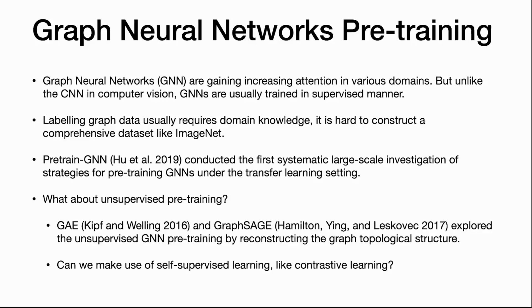The pre-trained GNN work first conducted a systematically large-scale investigation of strategies for pre-training GNNs under transfer learning settings. But what about unsupervised pre-training? We have graph auto-encoders and GraphSAGE, which explored unsupervised GNN training by reconstructing the graph topological structure, designing specific training tasks. But can we make use of self-supervised learning, like contrastive learning? And the answer is yes.